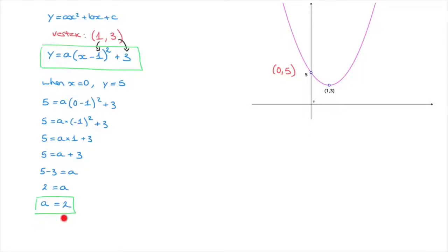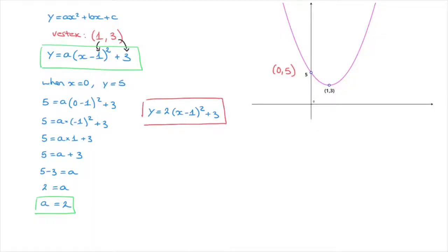Combining this value of a along with the vertex form, we can state that this parabola's equation is y equals 2 times (x minus 1) squared plus 3. That's the vertex form of this parabola's equation. Now, in a quiz or exam, we may be asked to write this in the form y equals ax squared plus bx plus c. If that's the case, all we have to do is expand the parentheses and simplify as much as possible.